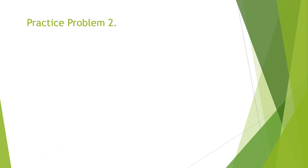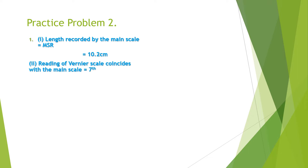Practice problem two, first case: we need to calculate the length recorded by the main scale. The main scale reading from the diagram is 10.2 centimeter. Second, we need to find the vernier scale division that coincides with the main scale — from the diagram it is the seventh division.